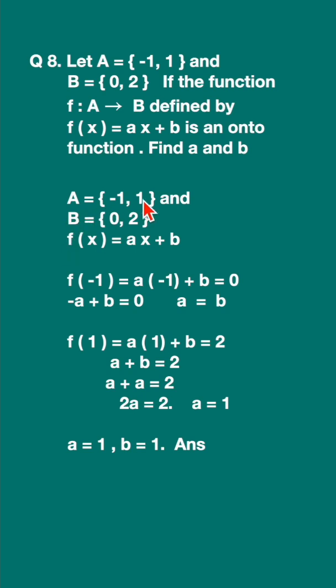Now let us write down this function. f(-1) equals—wherever x is, substitute -1—so a(-1) + b = 0. Why 0? Because 0 is the image of -1. So -a + b = 0, therefore a = b.